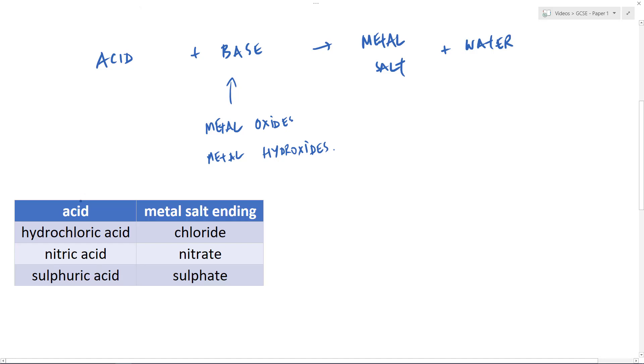So this table shows us very simply three acids that are quite common at GCSE: hydrochloric acid, nitric acid and sulphuric acid. You might say that's spelled with an F but it doesn't really matter. And then the metal salt endings that each of these acids gives. Hydrochloric acids produce metal salts that end in chloride, nitric acid nitrate, sulphuric acid sulphate.